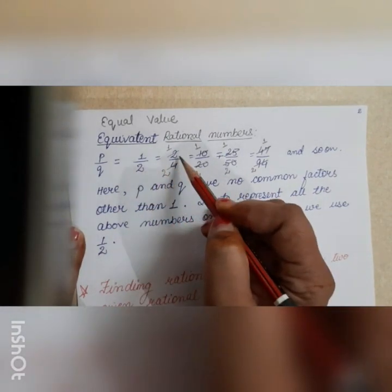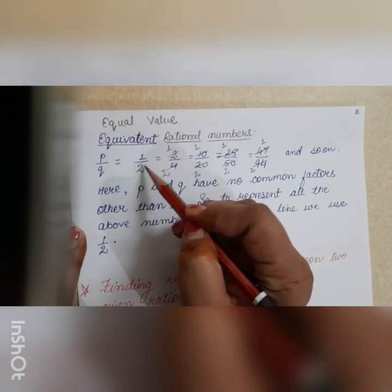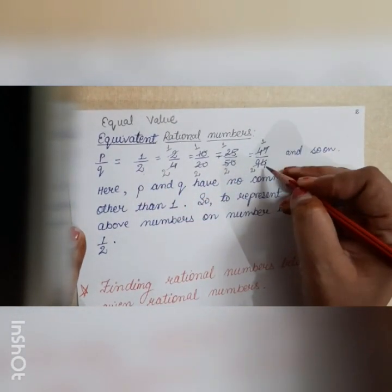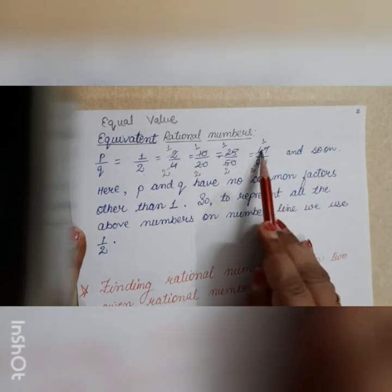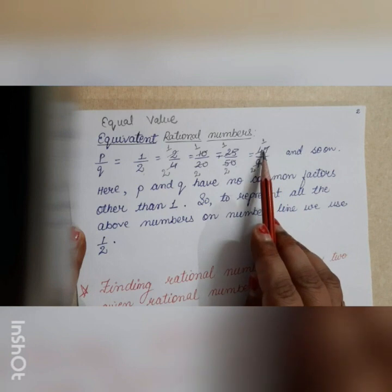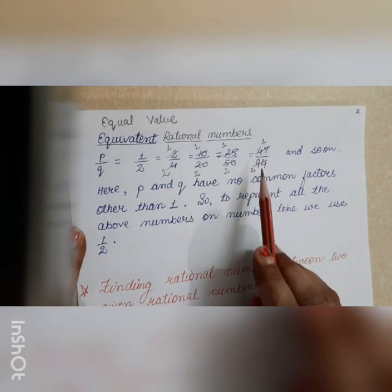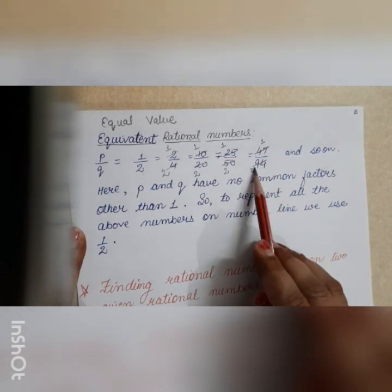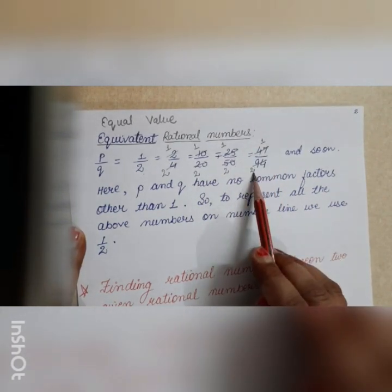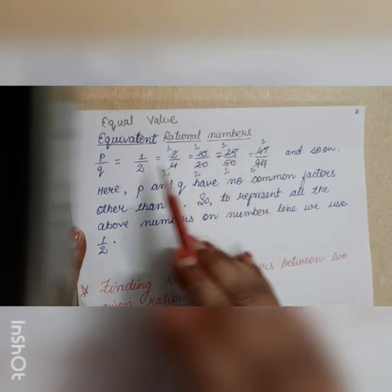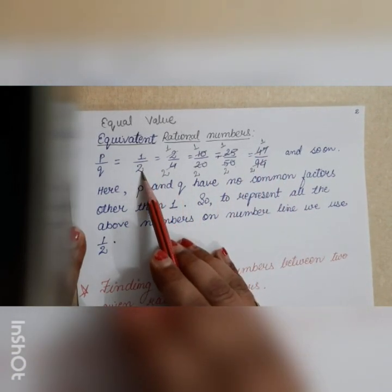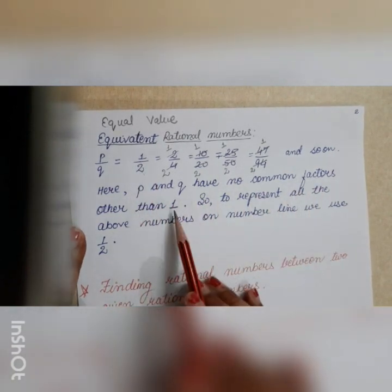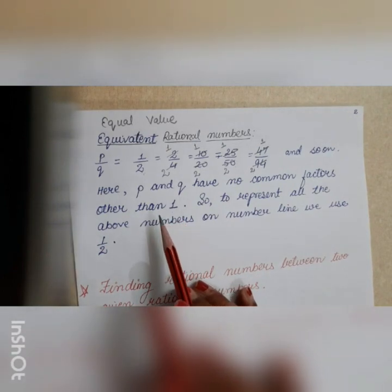For instance, 47 and 94 have a common factor of 47. Dividing both by 47 gives 1 and 2 respectively, so we get 1/2. And 1 and 2 have no common factor other than 1. So to represent all the above equivalent numbers on the number line, we use 1/2, which is their simplest form.